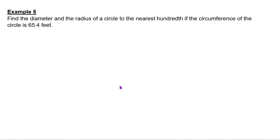Find the diameter and the radius of a circle to the nearest hundredth if the circumference of the circle is 65.4 feet. So my circumference is 65.4 feet.